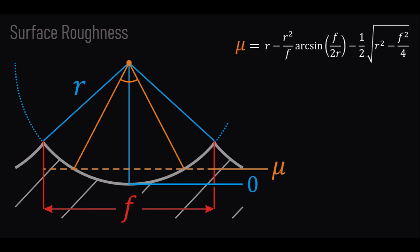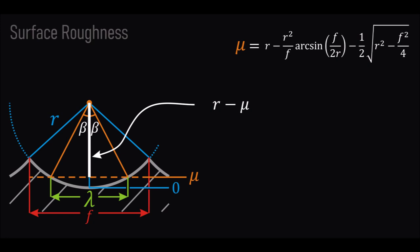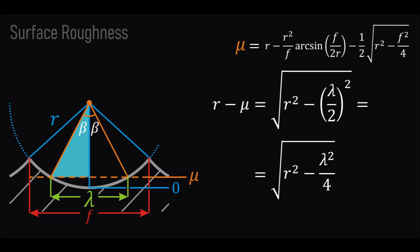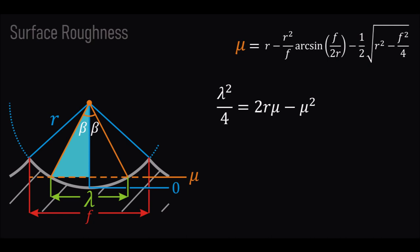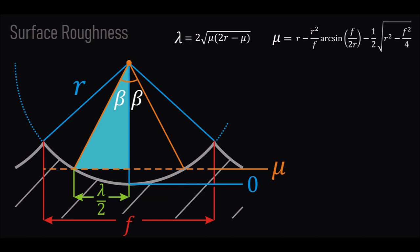Let's draw those two radii connecting the intersection between the surface profile and the average line. Let's call each of those two angles beta, and call that length lambda where the average line meets the surface profile. Using Pythagoras' theorem: R minus µ equals the square root of R squared minus (λ/2) squared. Carrying out the calculations and squaring both sides, expanding, cancelling R squared from both sides, and multiplying by 4, then taking the square root, we get the expression for lambda.